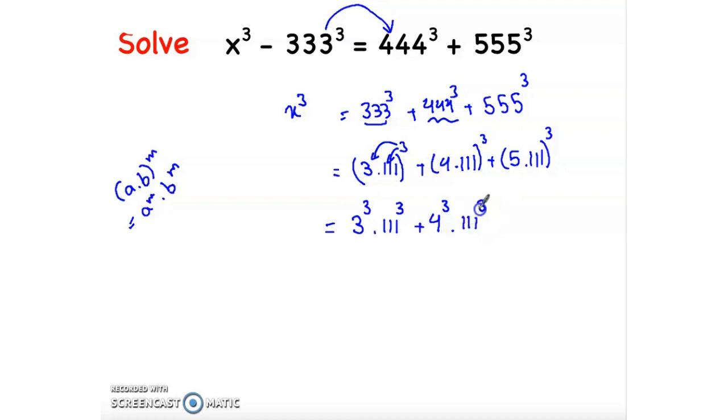Likewise here, 5 cubed times 111 cubed. If you notice we have 111 cubed, we can take it as a common factor. So 111 cubed times the quantity 3 cubed plus 4 cubed plus 5 cubed.